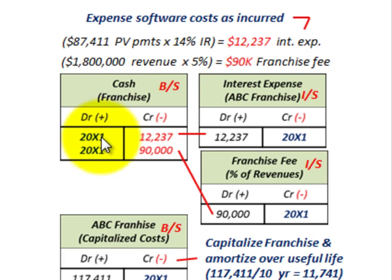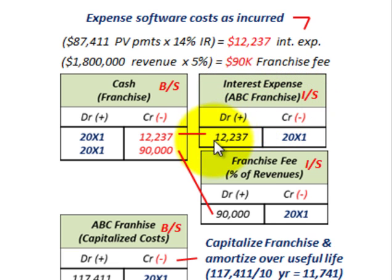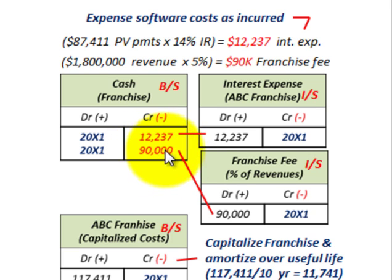At the end of 20X1, we credit cash for the interest expense of $12,237 and debit interest expense on the income statement for the same amount — reducing cash on the balance sheet and recognizing the interest expense. We then credit cash for the franchise fee of $90,000 and debit franchise fee expense on the income statement for $90,000.